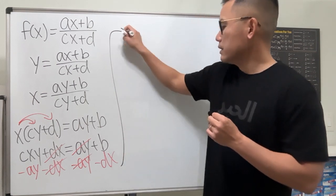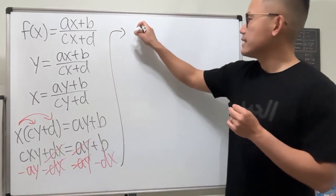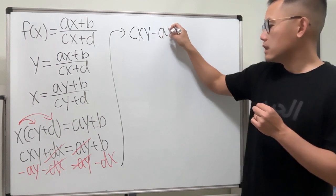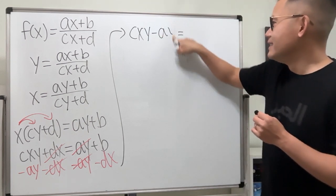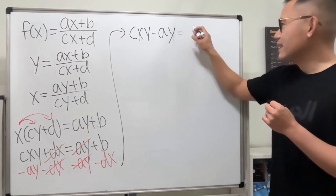Now, if you take a look, here we have cxy minus ay. That's equal to b minus dx.